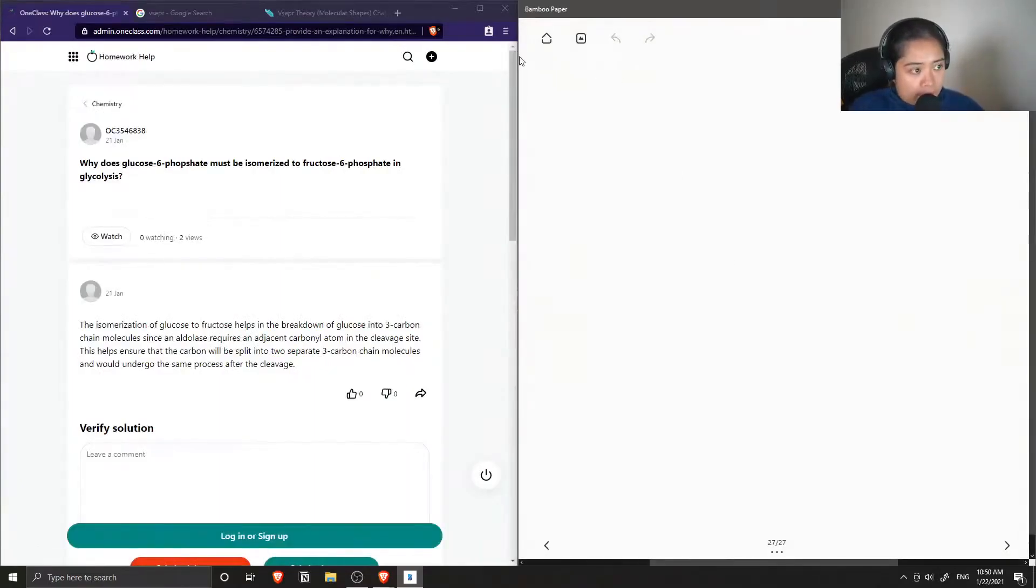Okay, so question number six: Why does glucose 6-phosphate, why does it must be isomerized to fructose 6-phosphate in glycolysis?